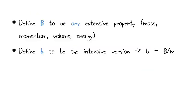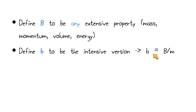What we can do is start off by defining what kind of property we want to track as the fluid moves around. We're going to define B to be any extensive property. Extensive means that it depends on how much of the substance there is — so that could be mass, momentum, volume, energy, or any number of similar things. Then we're going to define an intensive version of the same thing, labeled lowercase b. Remembering back to thermo, whenever we have an extensive property, we can divide by the mass to get an intensive version. So by definition, little b equals big B over M.